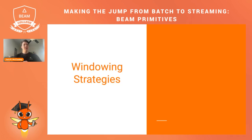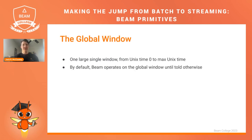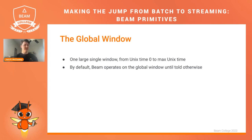Now we'll get into windowing. Windowing types include the global window, interval windows, and session windows. The global window is one large single window from Unix time zero to the maximum Unix time. By default, Beam operates within this window until told otherwise. So generally speaking, if you want to operate in the global window, you get it for free — you don't have to do any extra work.